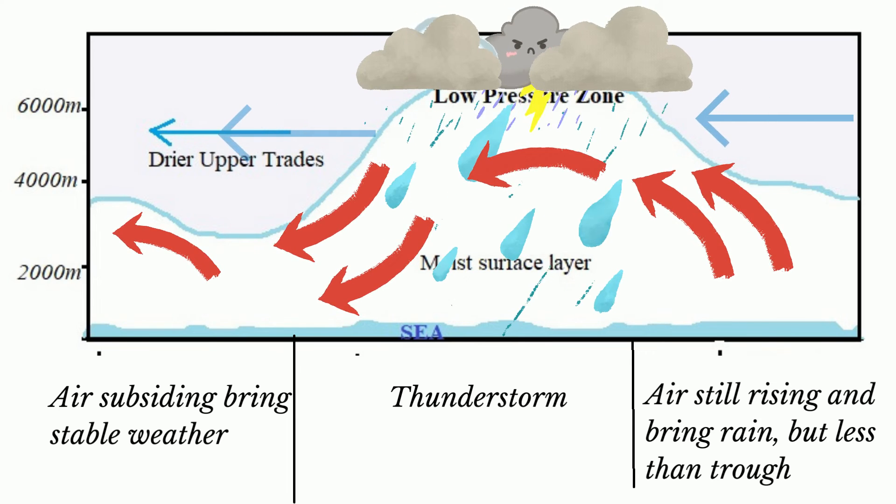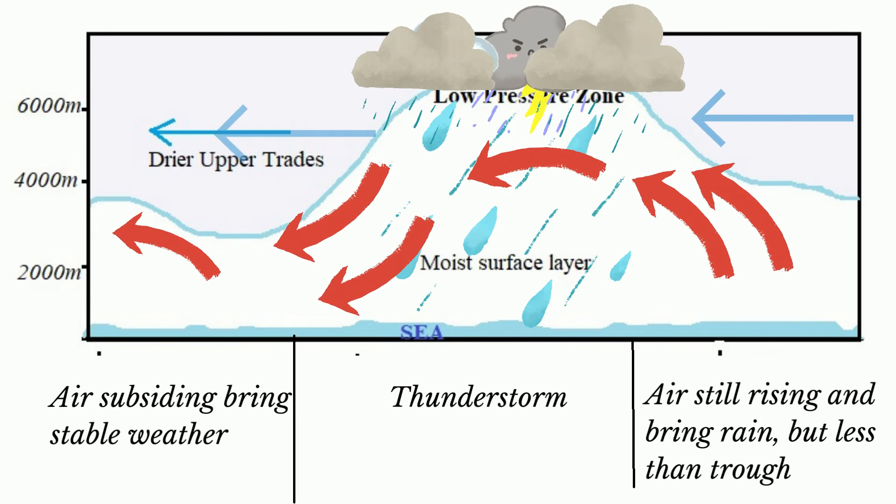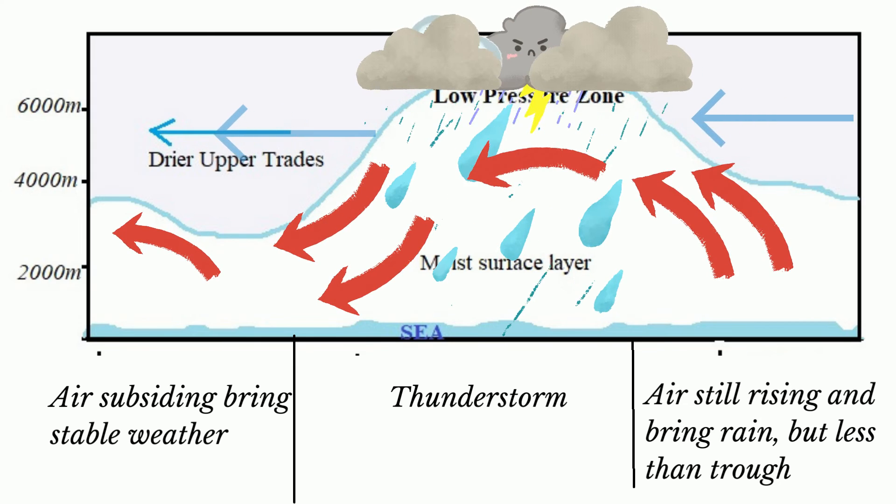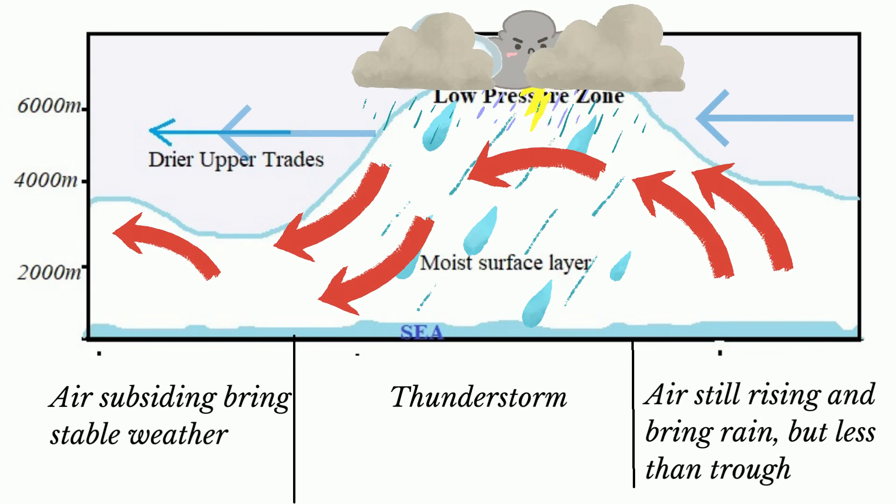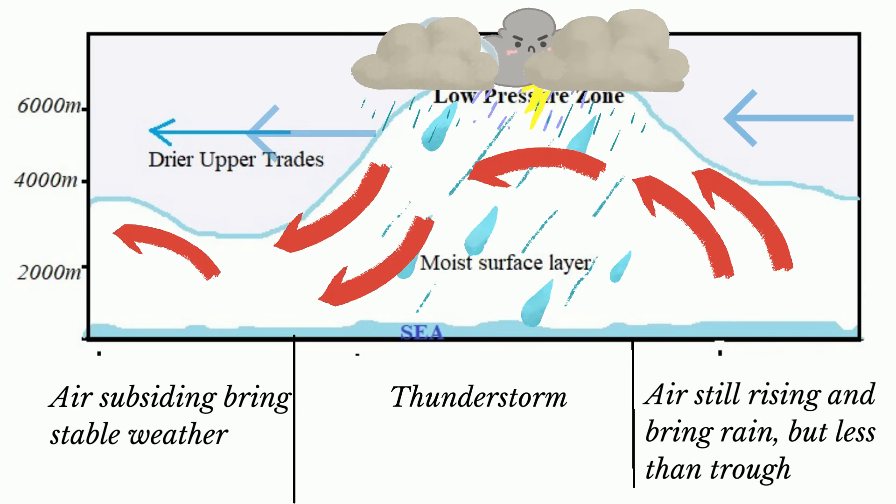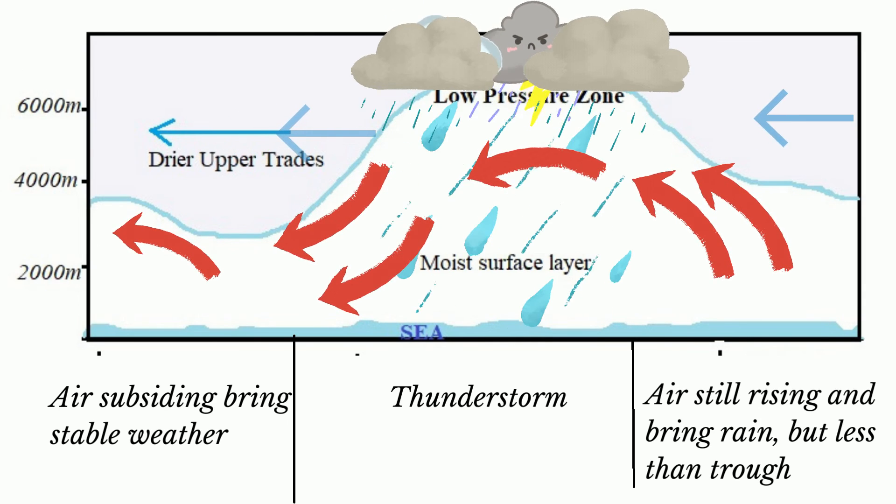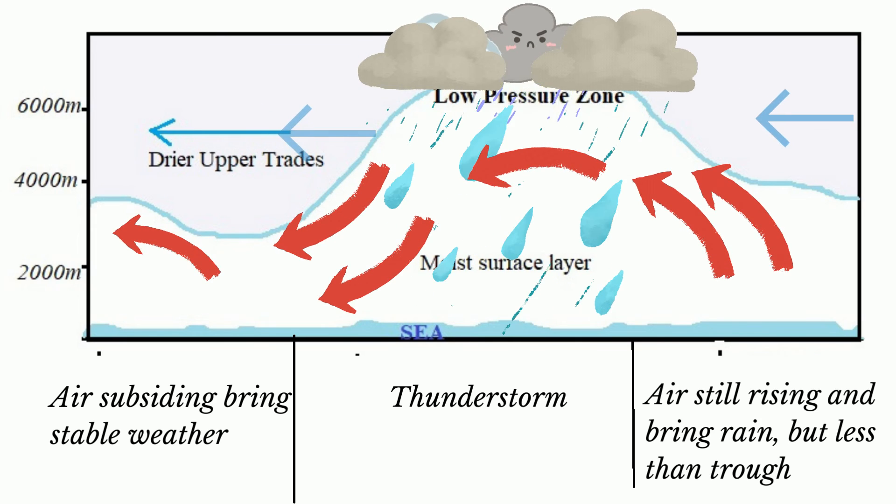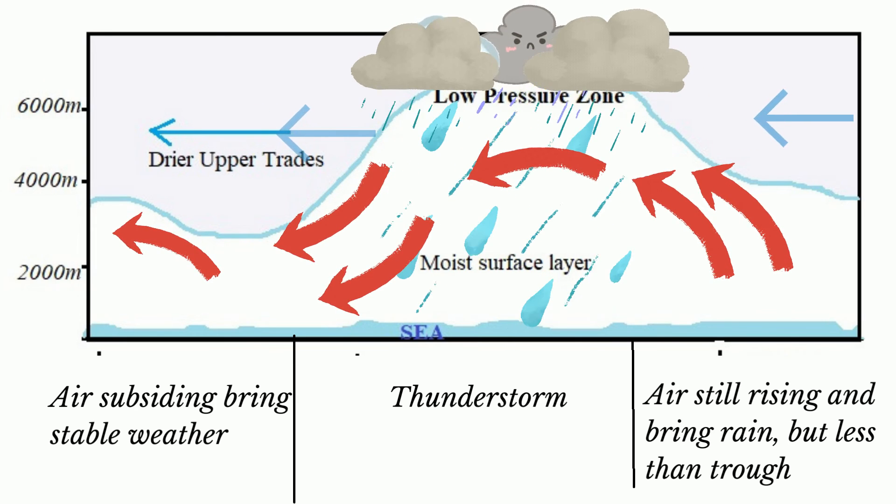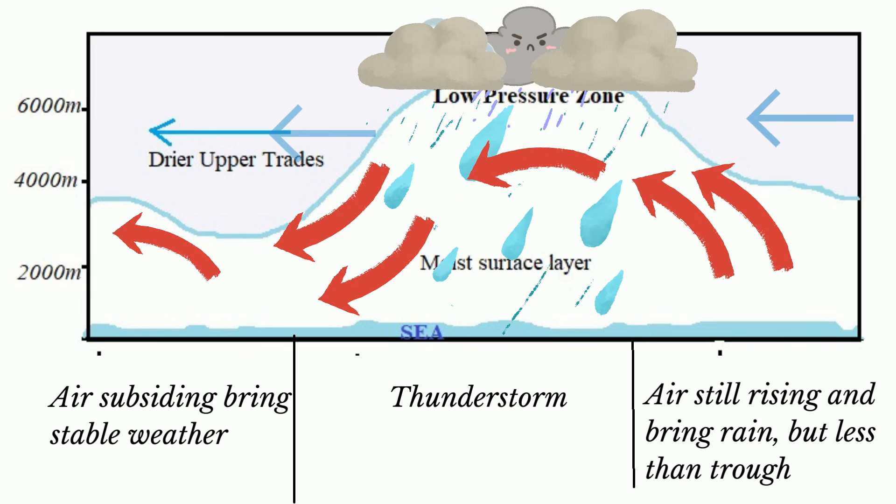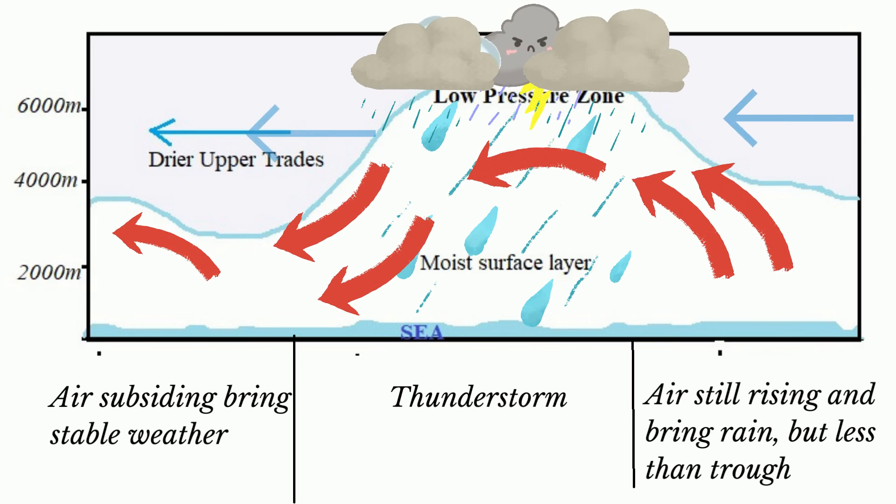Let's take another look at the easterly wave. Notice the difference between conditions to the west of the trough, at the trough, and to the east of the trough.